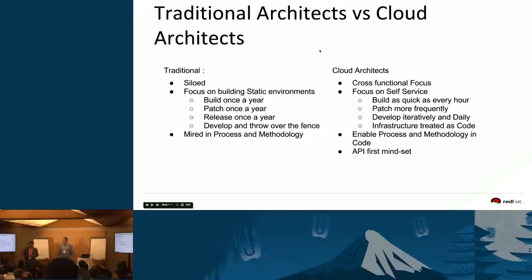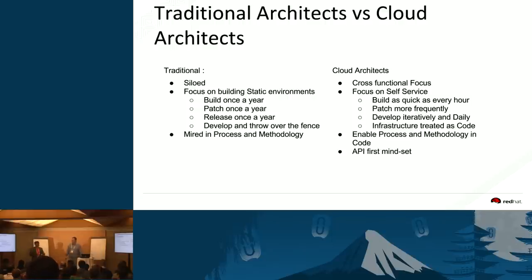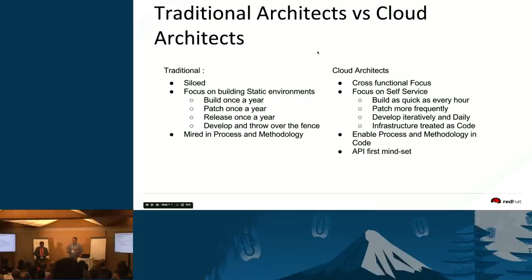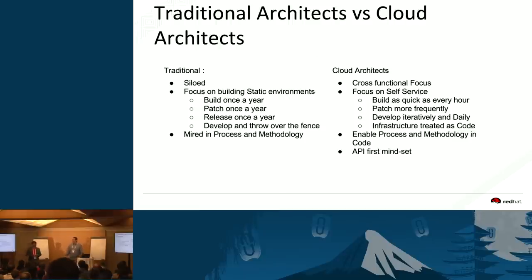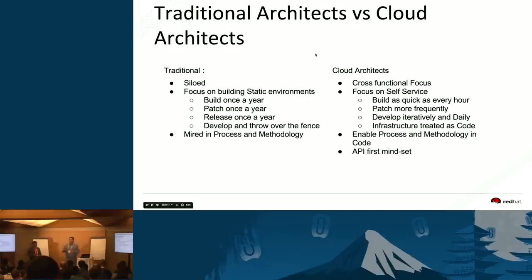A traditional architect only had to build something that lasted years, patched once a year, supporting product releases once a year — not worried about agility or scale, everything pre-planned. A cloud architect looks at much more frequent builds — maybe daily or weekly — enables self-service, develops iteratively, and treats infrastructure as code. Traditional architects had change management processes taking weeks for approval. Cloud architects enable process and methodology in code, with everything API-first, repeatable, and automatable.